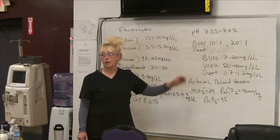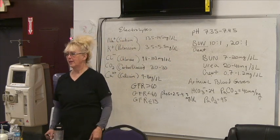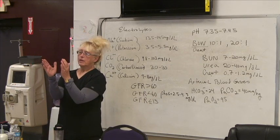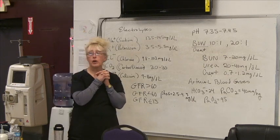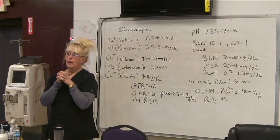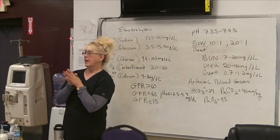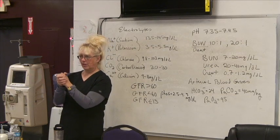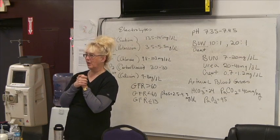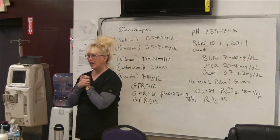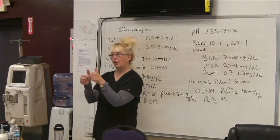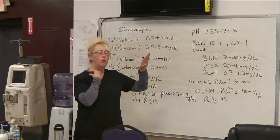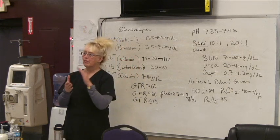The BUN creatinine ratio is key with regards to how the kidneys are functioning. In a normal functioning kidney, we're usually looking at a 10 to 1 or 20 to 1 BUN creatinine ratio. BUN is reabsorbed through the kidneys in a healthy functioning nephron — the nephron is the main functioning unit of the kidney.